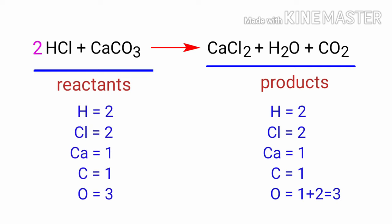The equation is now balanced. There are 2 Hydrogen atoms, 2 Chlorine atoms, 1 Calcium atom, 1 Carbon atom, and 3 Oxygen atoms on both sides.